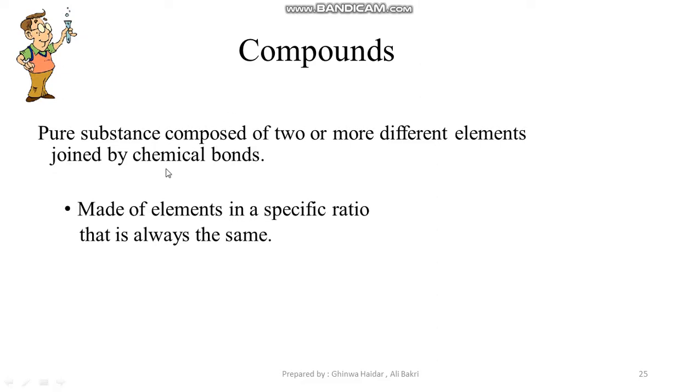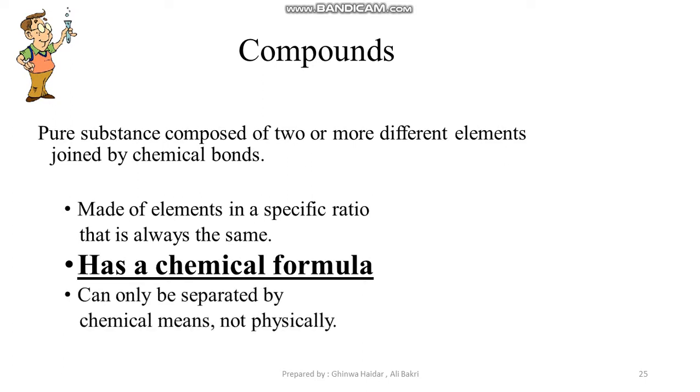What holds the elements together? It's called a chemical bond. The compounds are made of elements in a specific ratio that is always the same. This is what we will talk about later in the lecture on molecules. They have a chemical formula, which we will also talk about later in the lecture.